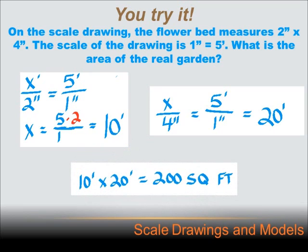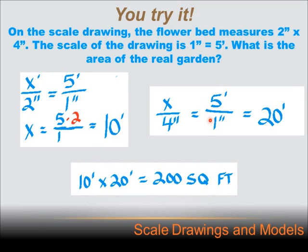On the other dimension, I set up my scale the same way. I've got 5 feet per 1 inch. My feet are on the top because I want to solve for feet. And that's equal to x feet per 4 inches. 4 inches is the dimension on the drawing, on the scale drawing. When I solve this, I multiply both sides by 4, and I get 20 feet. So now that I know the real garden is 20 feet by 10 feet, I can figure out the area. 10 feet times 20 feet equals 200 square feet.